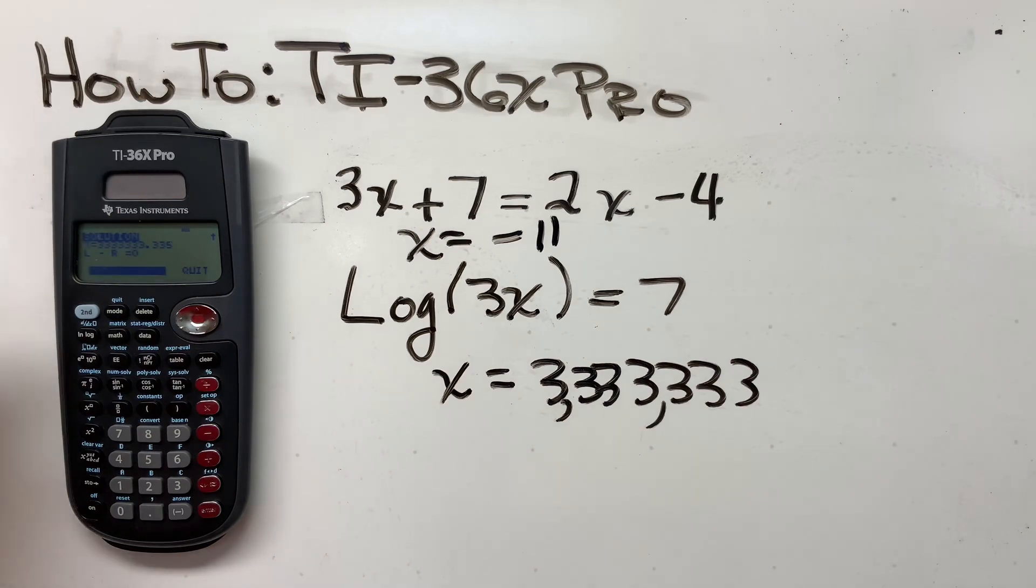And there you go. And again, left minus right is zero, and it's a balanced equation. Okay? Look at all the functionality you have. Hope this helps.